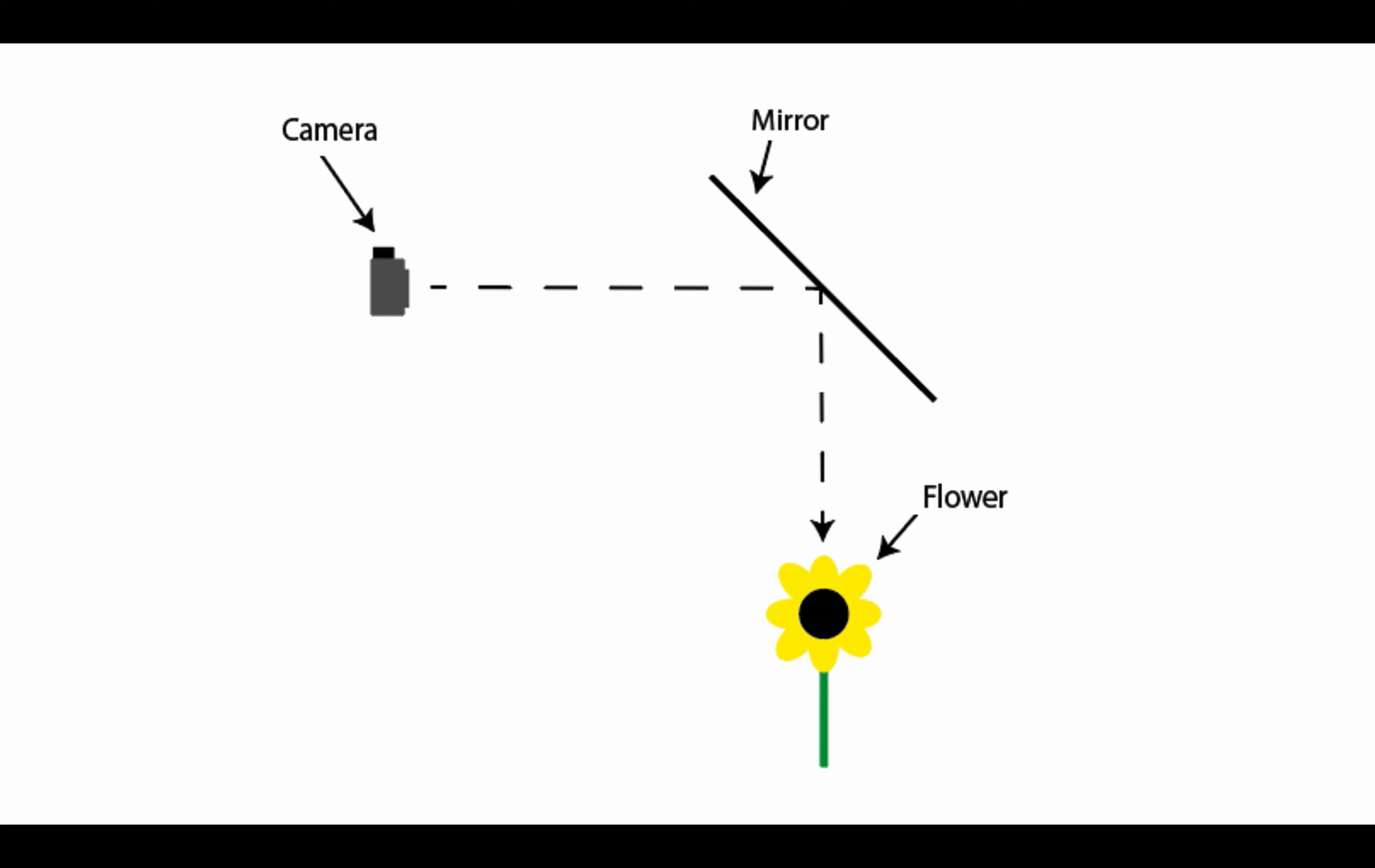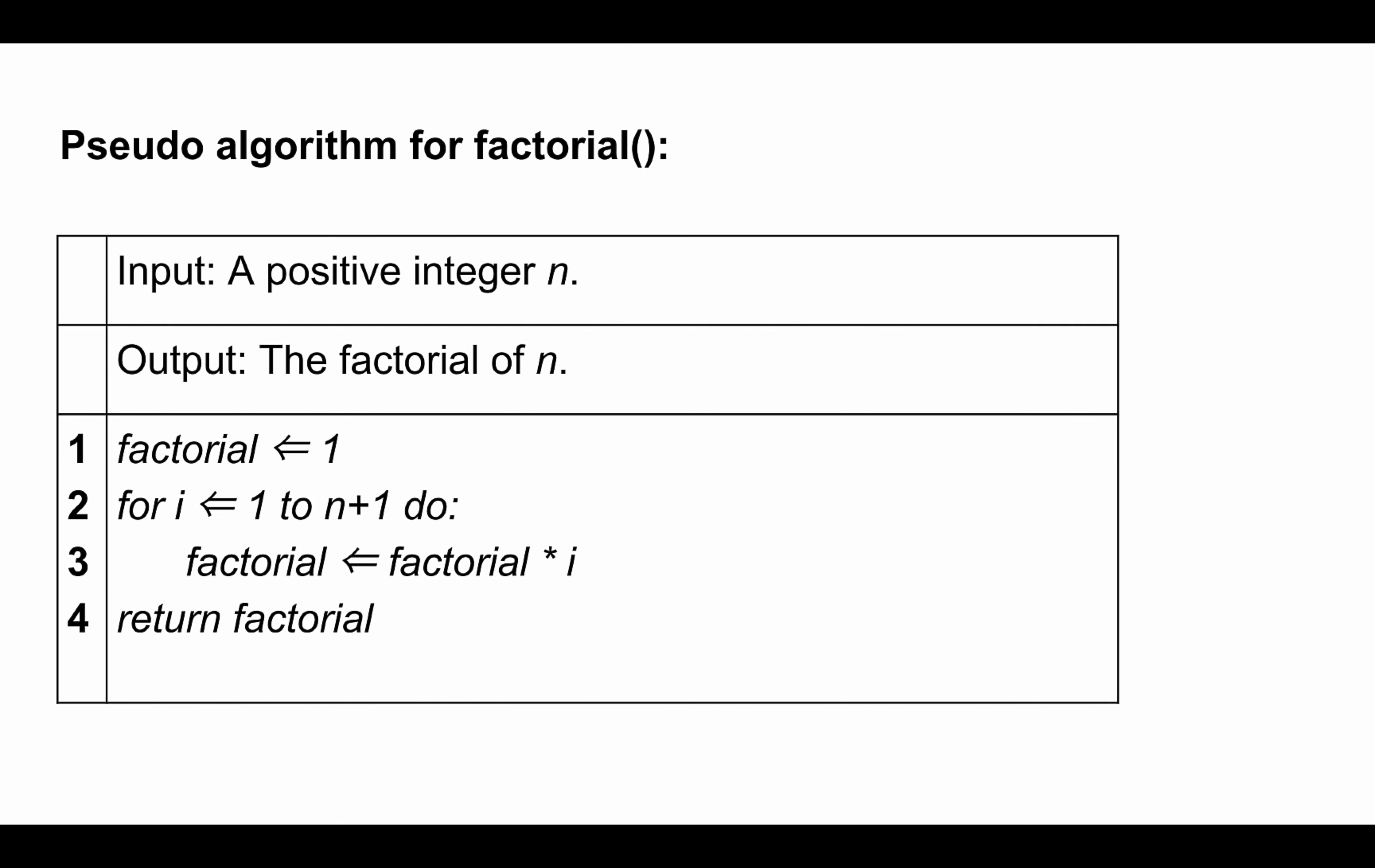Let's take a look at a factorial example. On my screen I have an algorithm for factorial. On line one we have a basic operation of assigning a value to the variable. On line two we have n basic operations wherein we increment the variable i, n times.